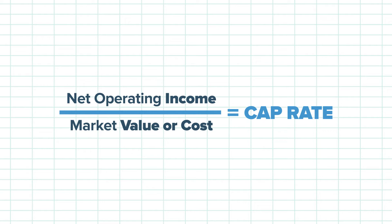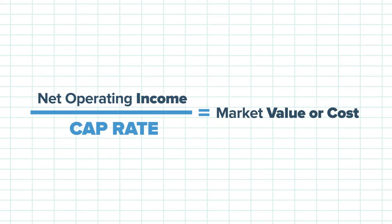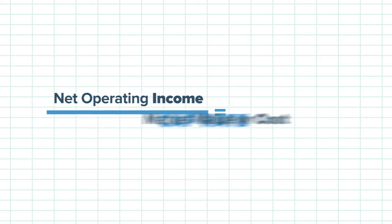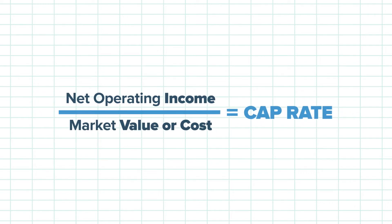The math behind cap rates is pretty simple: it's net operating income divided by market value or cost. Likewise, when you know what the cap rate is in any given market, you can also use this number to calculate the value of a property by dividing the net operating income by the cap rate. Net operating income divided by the cap rate gives you your market value. Again, it's just a ratio of income over cost, but both components in the equation warrant some further explanation.